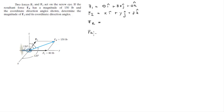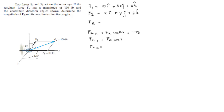FR has an X component, a Y component, and a Z component we're going to find. The X component is FR cosine of 120°, this angle that it forms with the X axis, which is equal to negative 75. The Y component is FR cosine of 130°, which is this angle it forms right here, which gives negative 96.4, but it becomes positive because this is the angle it forms with the negative side of the Y axis.